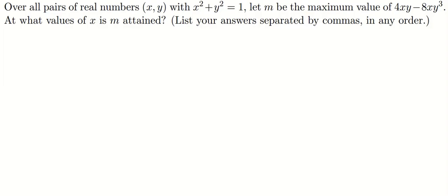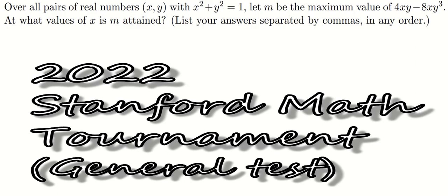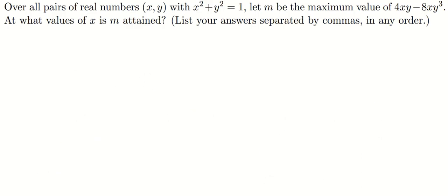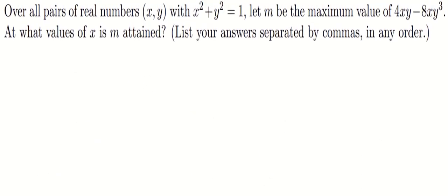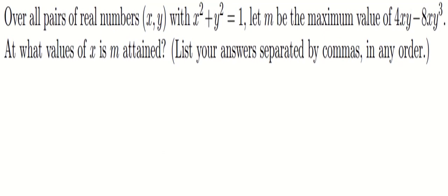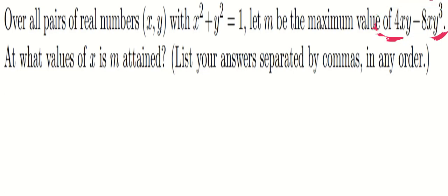For today, let's look at this question from the Stanford Math Tournament 2022, from the general test. The question says that over all pairs of real numbers x, y with x squared plus y squared equals 1, let m be the maximum value of 4xy minus 8xy cubed. At what value of x is m attained?